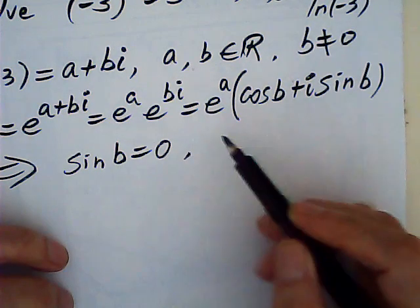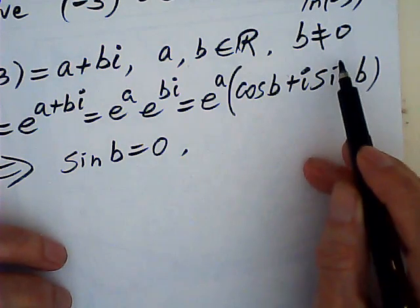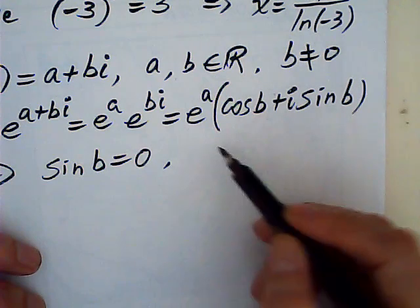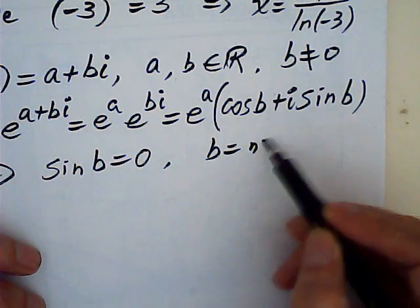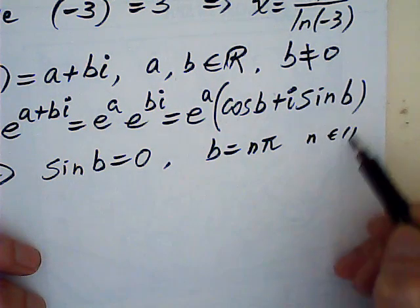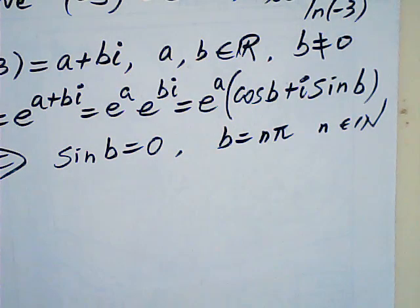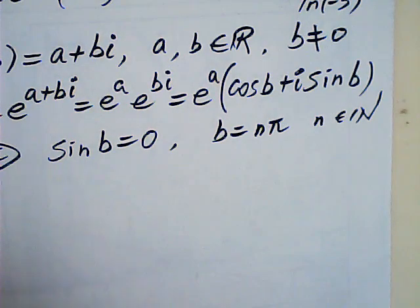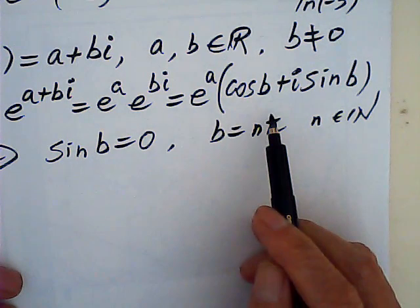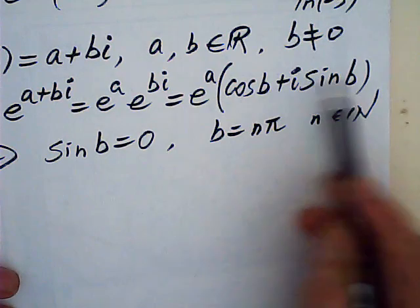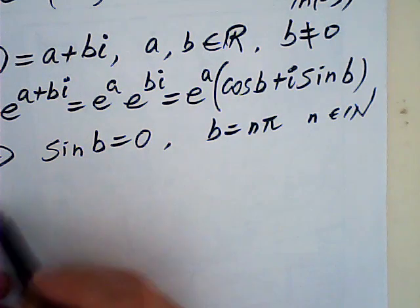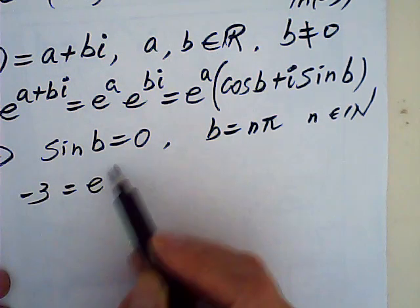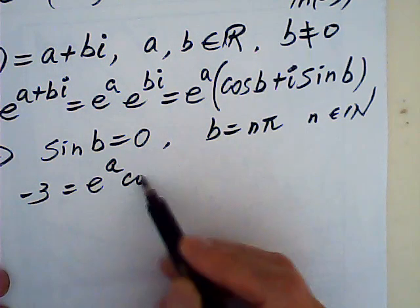Now then, b cannot be zero. Therefore, b must be n pi, where n is a natural number. Now, be careful that although that b could be multiple of pi, but we have to consider cosine b. This is zero, right? This must be zero. Therefore, negative 3 is equal to e to the power of a times cosine b.